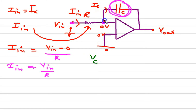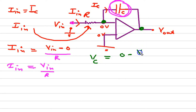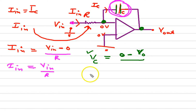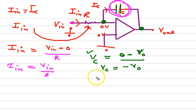Now the voltage at the capacitor: the difference of the voltage is zero volts minus the output voltage V_out. So zero minus V_out — that is the voltage across the capacitor. Therefore V_C equals minus V_out.